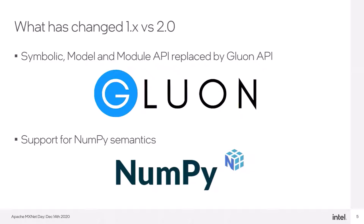MXNet version 2.0 introduces some changes in the interface. Gluon API has now become the default one, superseding symbolic and model APIs. It is unifying the flexibility of imperative programming with the performance benefits of symbolic programming. Moreover, MXNet 2.0 now supports fully numpy semantics.